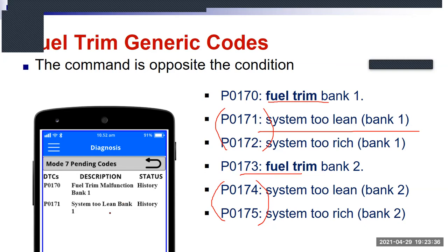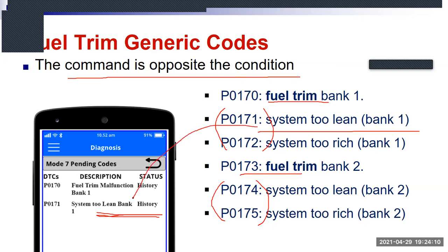Here are our fuel codes: P0171 is system too lean bank one, and we can dive it down — either it's too lean or too rich. You've got the same thing for bank two. If you had a V engine it has a bank on each side. I've even had four-cylinder engines like little RAV4s where the exhaust is configured so they'll have one O2 sensor for two cylinders and another air-fuel ratio sensor for the other two cylinders — trimming out two banks of fuel control. A P0171 means the system is running too lean. The command is always opposite the condition: if the O2 sensor says you're lean, the computer's response is to go rich. For that code to set, the O2 sensor keeps saying you're lean, the computer keeps trying to go rich, and eventually it goes too far askew and the code sets.